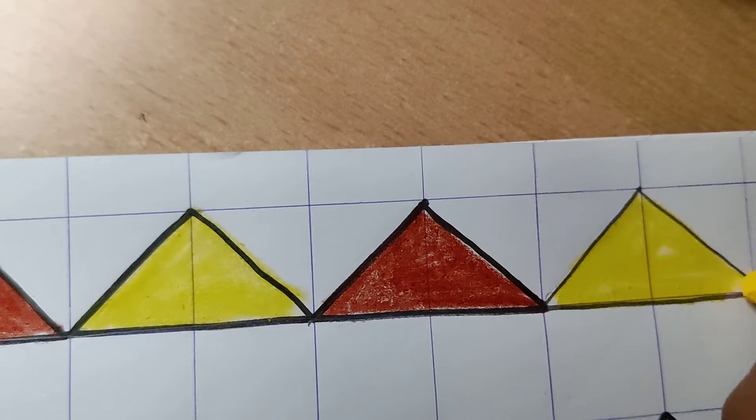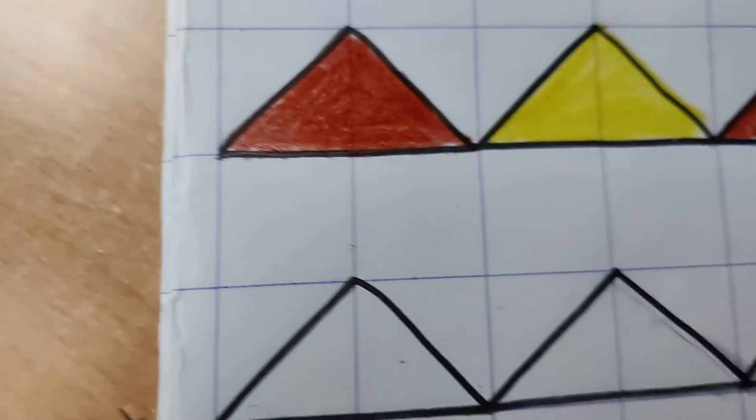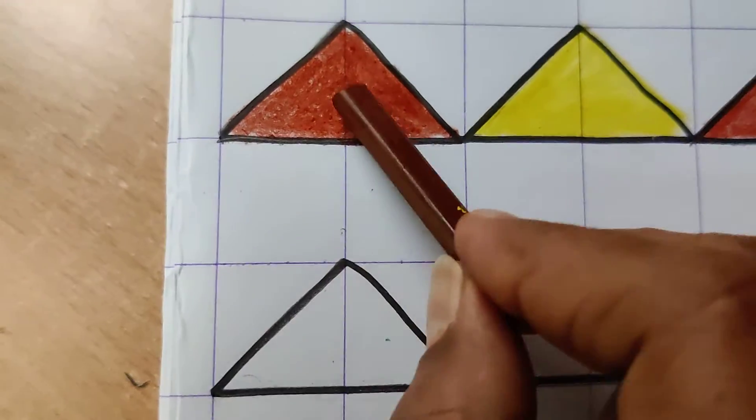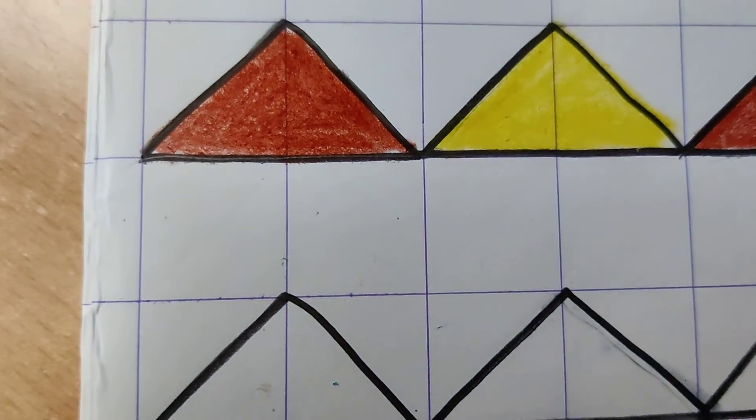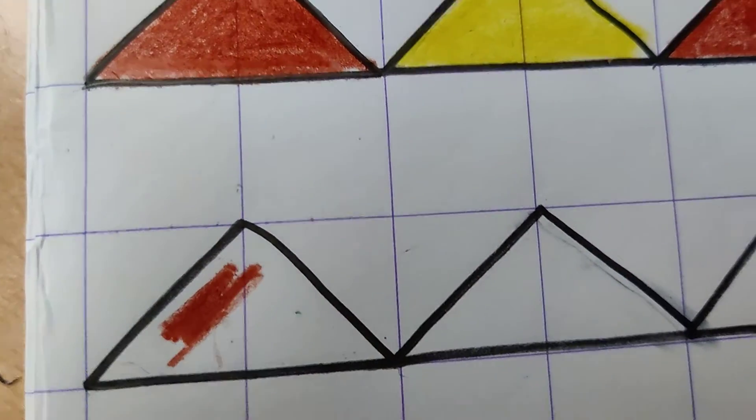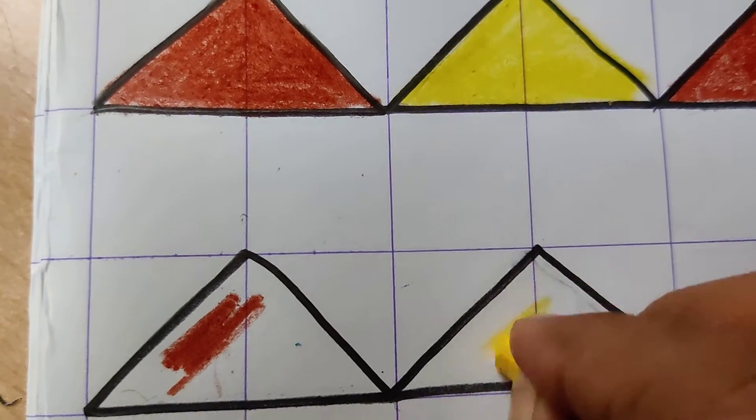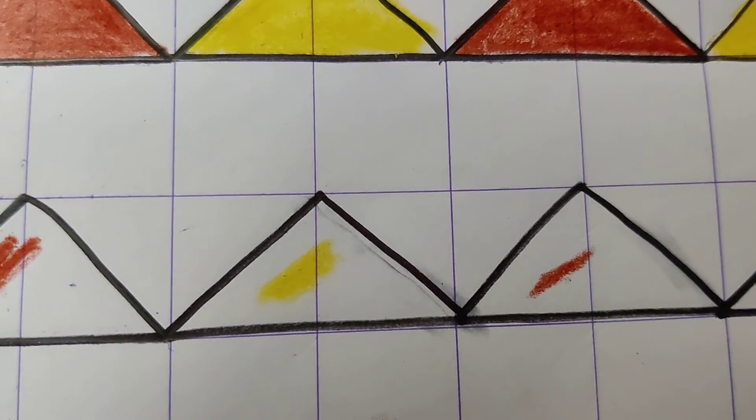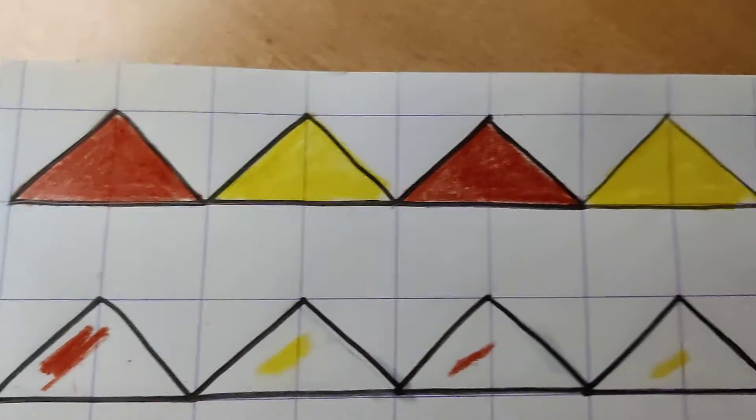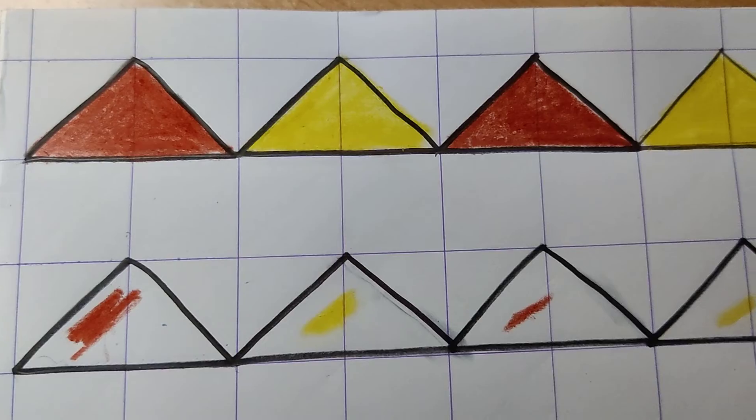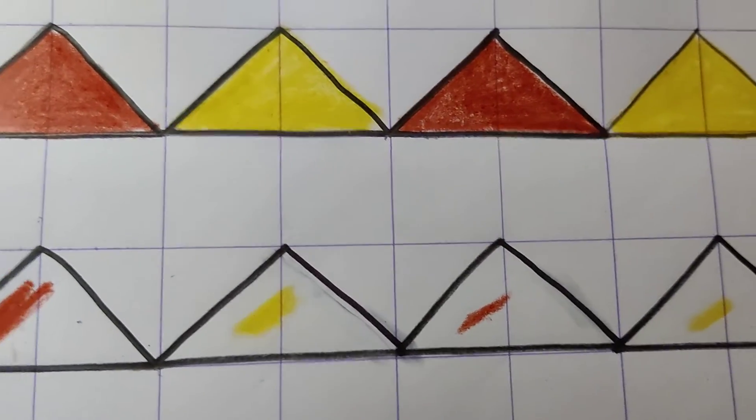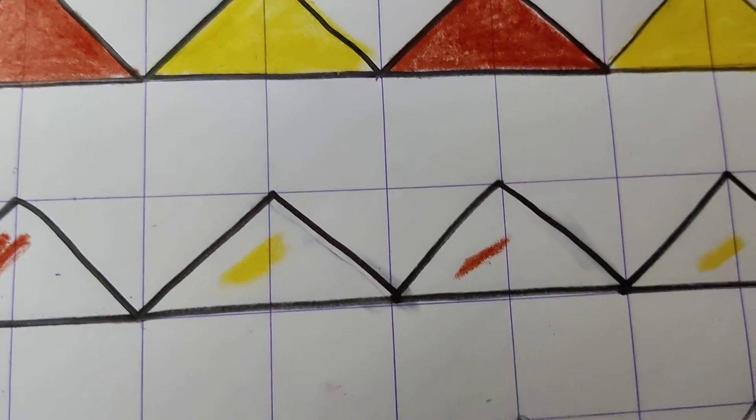Next line also you will begin with brown. This first one is brown, so we will do this also brown. Again you will color brown, and then yellow. Then again brown, and then again yellow. Like this, alternate you have to color. I hope you have understood. Finish this drawing and I will teach you the next one in the next class. Thank you, have a nice day.